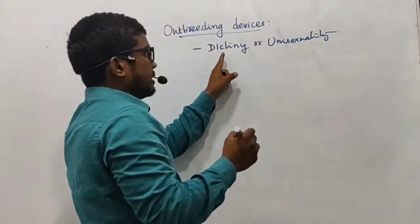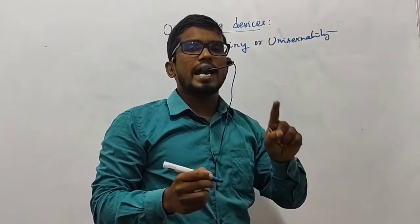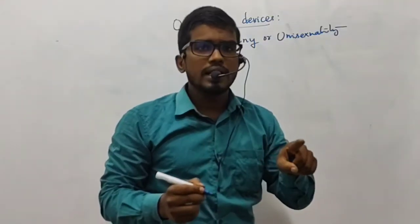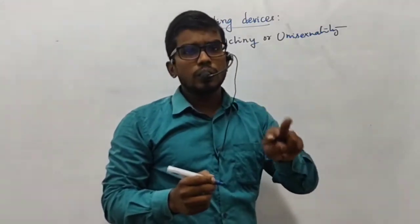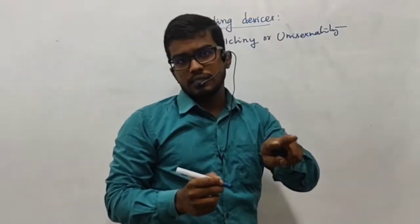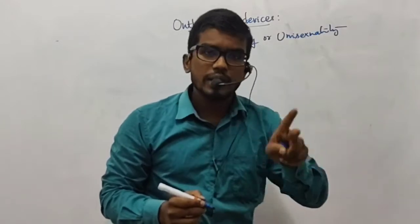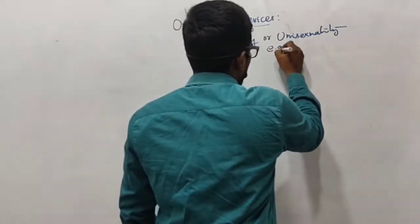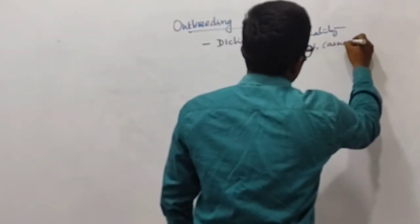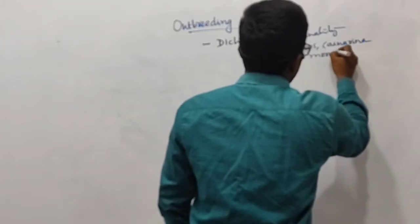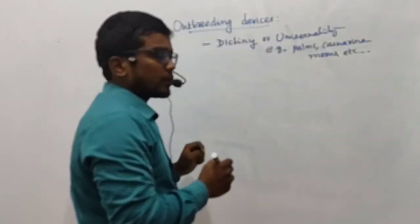In dicliney or unisexuality, the flower may have either the androecium — the male reproductive part — or the gynoecium — the female reproductive part — but not both. In that case, cross-pollination is the only possibility. Examples include palms, casuarina, and morus, where we can find dicliney or unisexuality.